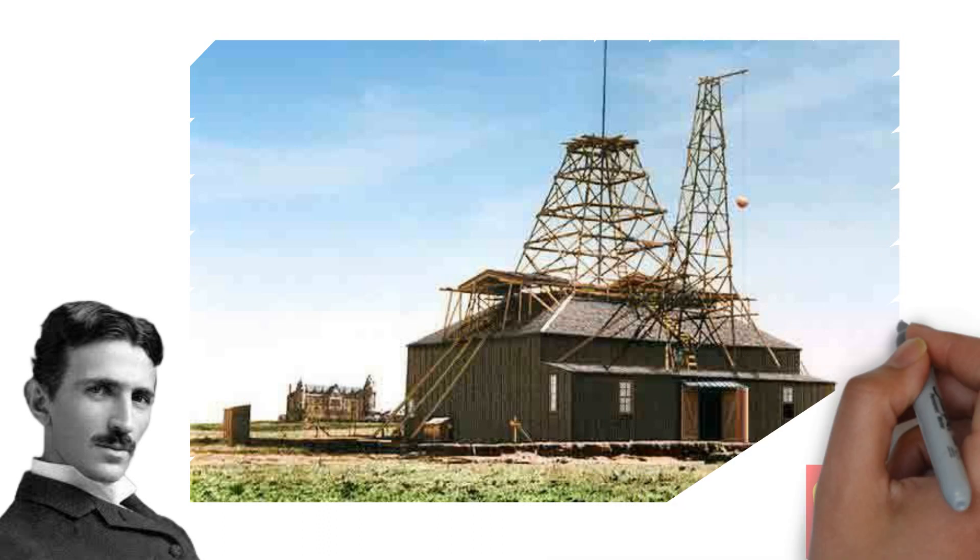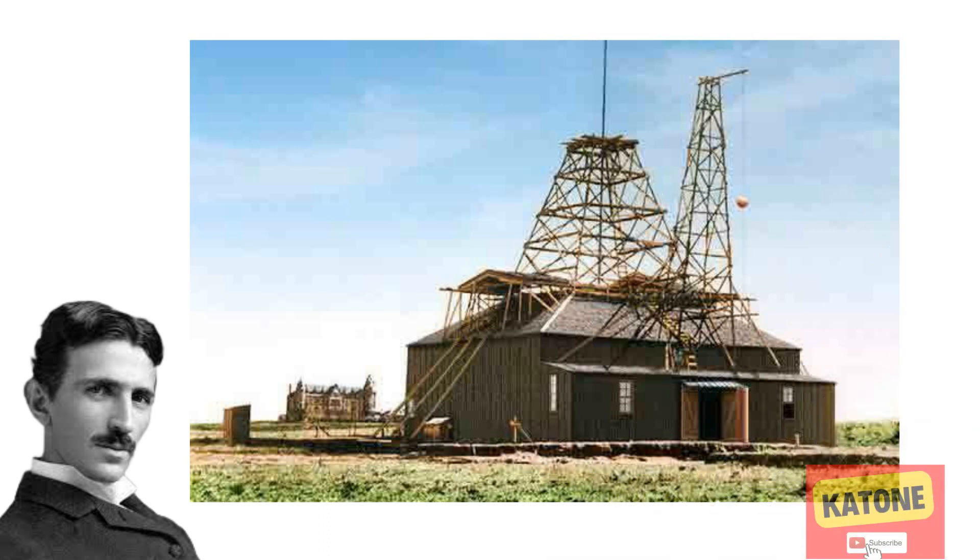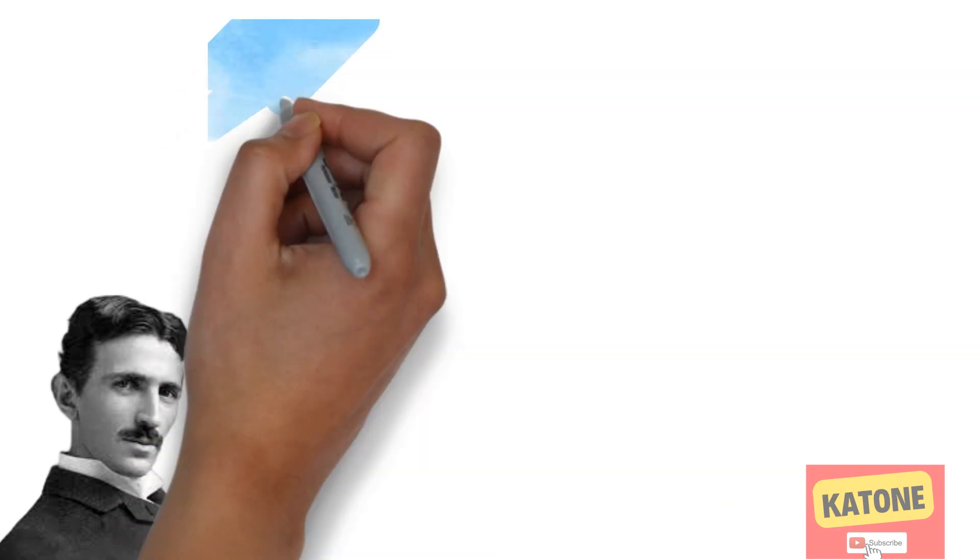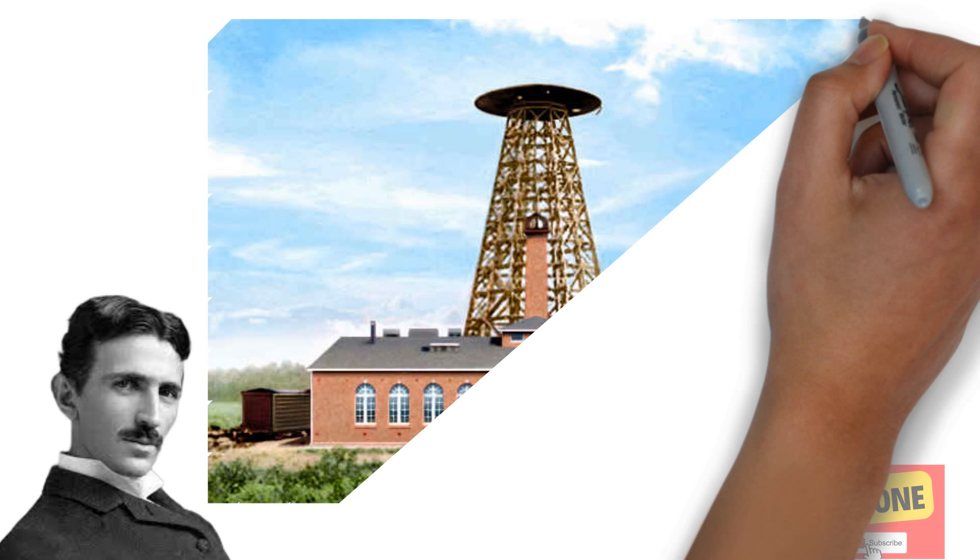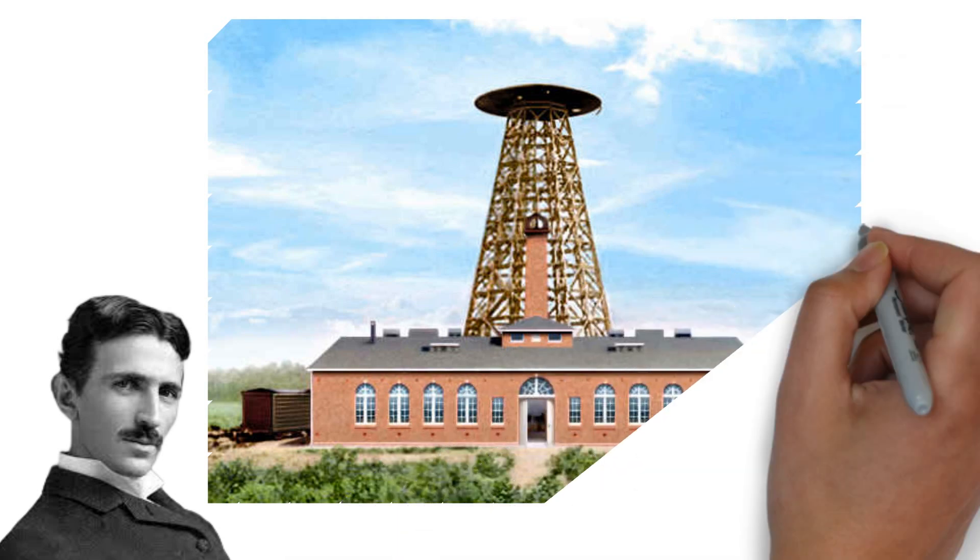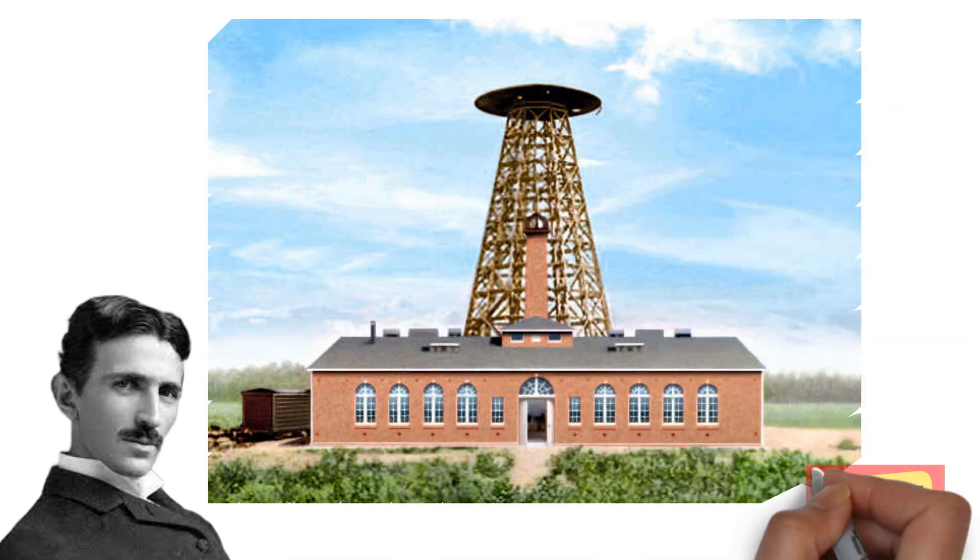Nikola Tesla moved his lab to Colorado Springs where he did super cool experiments with lightning and electricity. He even showed his neighbors how awesome his experiments were, but sometimes it caused their lights to go out.